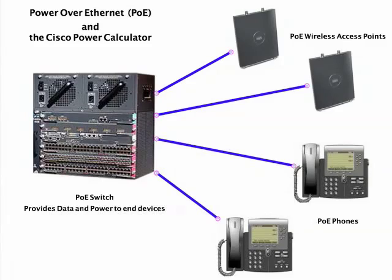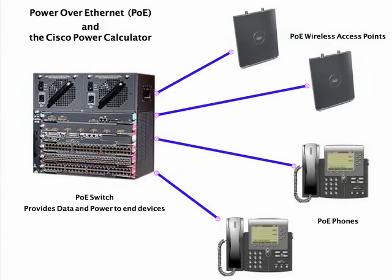Something else you would want to run on PoE are IP phones. Your traditional phone in your house — maybe not anymore with the advent of mostly wireless phones — but your old traditional phone was powered from the CO, the central office. So technically it was kind of a PoE, or a power over wire device. That's why when your power went out in your house, your phone still worked.